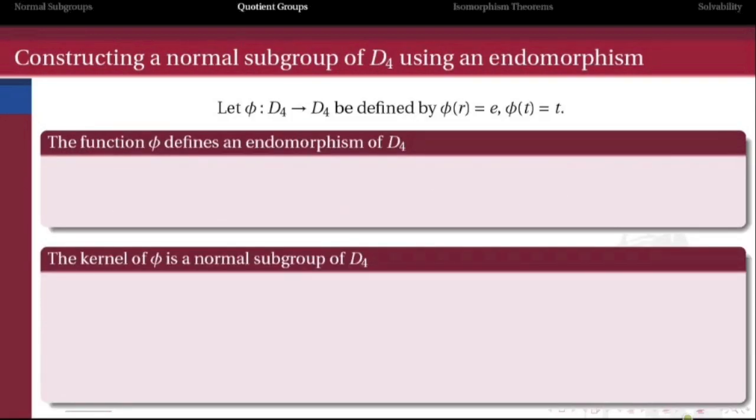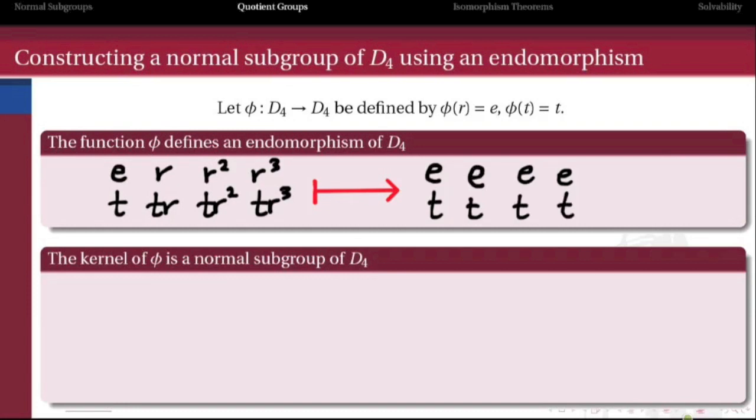Here's another example, again made more interesting by the use of a nonabelian group. Let's think of the dihedral group with a square again and define an endomorphism, in other words a homomorphism from D₄ to itself, that sends the rotation R to the identity element, and the transposition T is just sent to itself, the reflection T is sent to itself. So this defines the following endomorphism of D₄ that sends these eight elements to those eight elements. Notice all the rotations, regardless of how many times they're rotating, they're all getting sent to the identity, and all of the reflections are getting sent to the same reflection T.